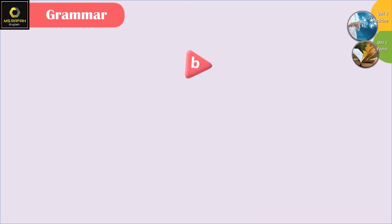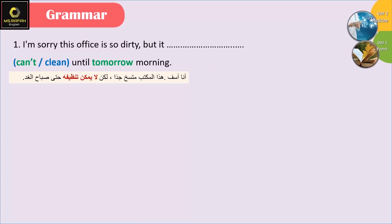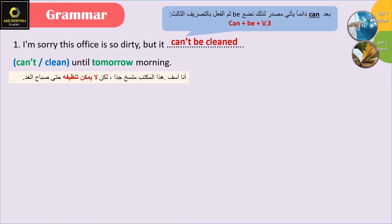Let's see the second question: fill in the gaps with the correct passive forms of the verbs in brackets. 'I'm sorry this office is so dirty but it can't be cleaned until tomorrow morning.' كان تحتاج دايما لمصدر بعده، وبما أنه الفعل مبني للمجهول فمنحط be وبعدها منحط الفعل الأساسي بالتصريف الثالث — دائما بالمبني للمجهول الفعل الأساسي لازم يكون بالتصريف الثالث.